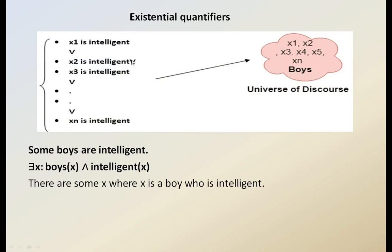For example, with the existential quantifier: X1 is intelligent, or X2 is intelligent, or X3 is intelligent, or Xn is intelligent. So X1, X2, X3 to Xn boys — only a few are intelligent. That means some boys are intelligent; this quality is not applicable for all, only for some. This is represented as: there exists X, boys(X) AND intelligent(X) — there are some X where X is a boy who is intelligent.